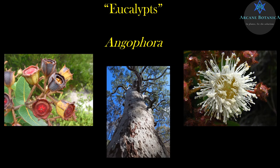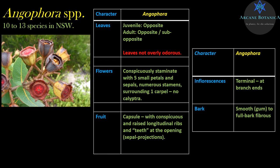Hey there folks, welcome back. Dan Clark from Arcane Botanica and as promised, another installment on plant identification. This continues the series on eucalypts from an Australian perspective. Lecture one covered the three genera that comprise the eucalypts of Australia, and as promised I've done some additional lectures. This one is on Angophora — just going to cover Angophora in this one. Diving straight into it because I'm trying to keep these on the short side.